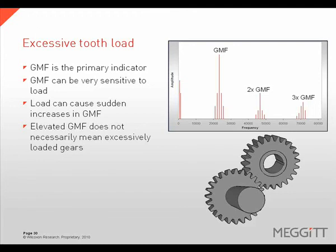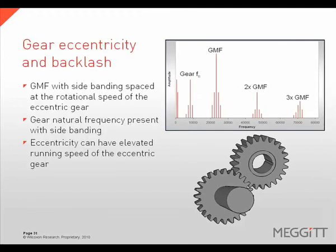Elevated gear mesh frequency does not necessarily mean excessively loaded gears. Gear eccentricity and backlash problems will create elevated levels of gear mesh frequency with sidebands spaced at the rotational speed of the eccentric gear. The gear's natural frequency can be present with sidebanding, and running speed harmonics of the eccentric gear can be elevated.